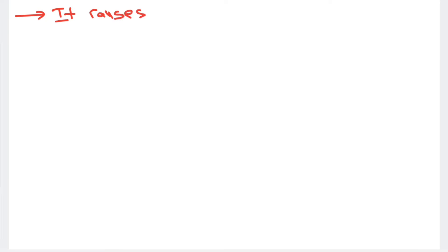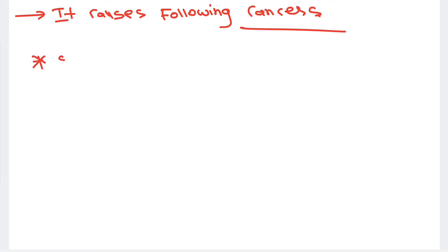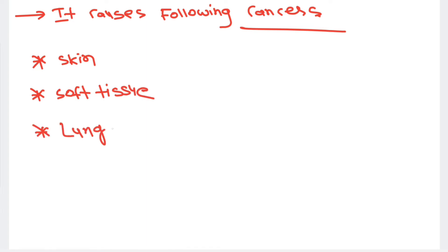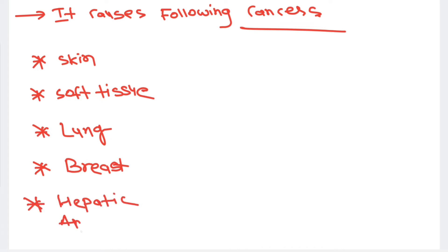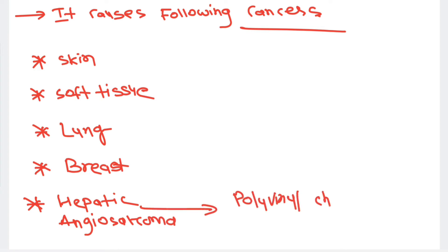Polycyclic aromatic hydrocarbons can cause the following types of cancer: skin cancer, soft tissue cancers, lung cancer, and breast cancer. The most common cancer caused by them is hepatic angiosarcoma, which is a vascular malignant tumor of the liver, and this is especially caused by polyvinyl chloride.